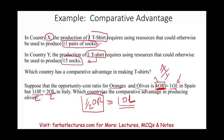Italy has the comparative advantage in producing olives, because they only give up half a ton of oranges per ton of olives. Spain, by contrast, has to give up 4 tons of oranges — that's far too expensive. Spain should instead produce oranges and sell them, then exchange for olives.